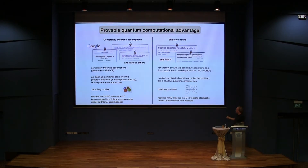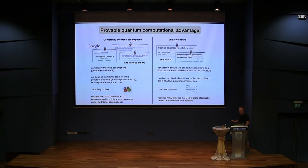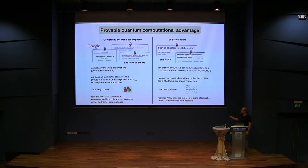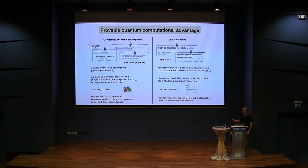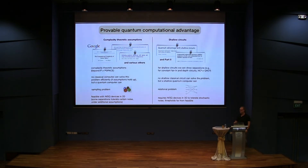Now we can look at different approaches that have been used to show such a quantum advantage for different kinds of problems. The first part is the one I've mostly been talking about, which kind of led to the Google experiment. Here the idea is really that we need to introduce additional complexity theoretic assumptions, and using them we can find certain problems that cannot be solved efficiently with a classical computer but can be solved efficiently with a quantum computer. These problems are usually sampling problems — you look at the complete distribution, or you want to sample from the output distribution of a quantum computer. That's important because if you only look at a single output, such as a binary measurement to solve a decision problem, it would be much more difficult to find these gaps.